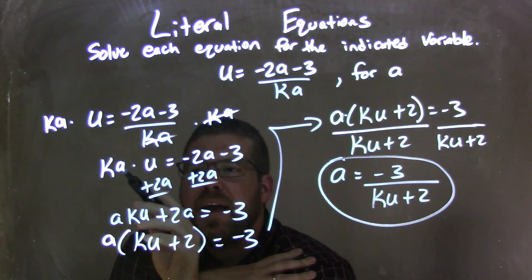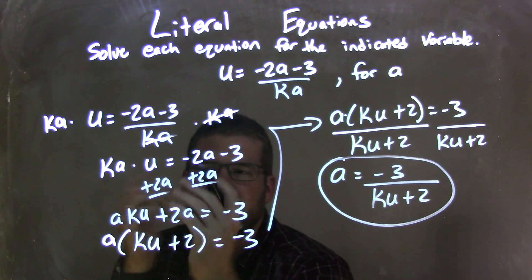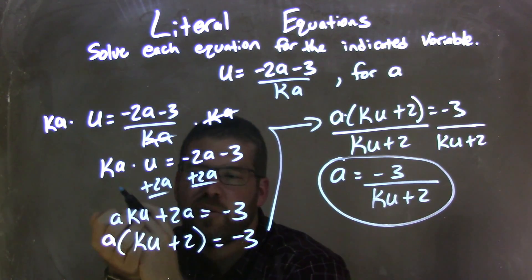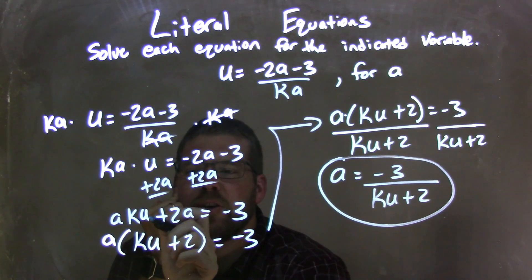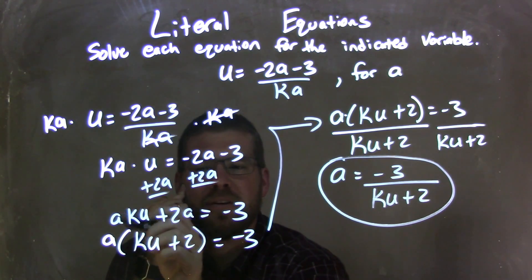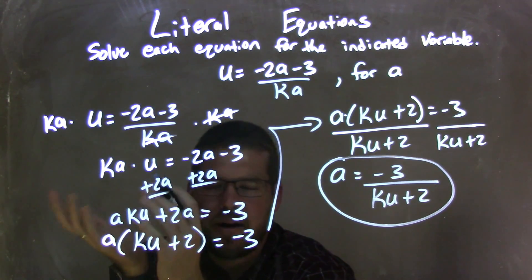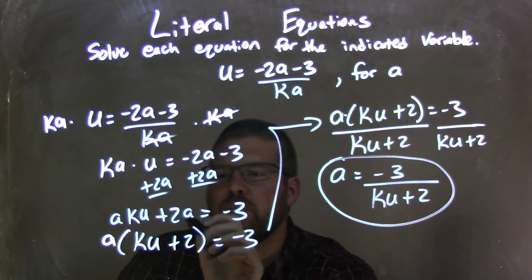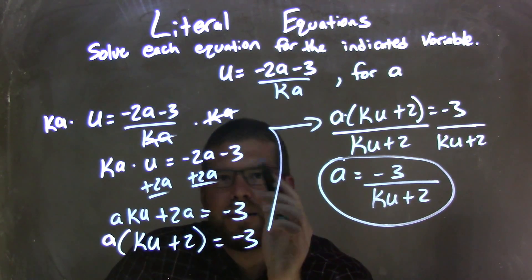I then had to add 2a to both sides to get all my a's together. But remember that ka times u is really just ka u, and so I just rearranged it using the commutative property, giving me a ku, because I like to have the variable that I'm looking for on the outside. That's my personal preference. And that's plus 2a, and that's going to be equal to negative 3.